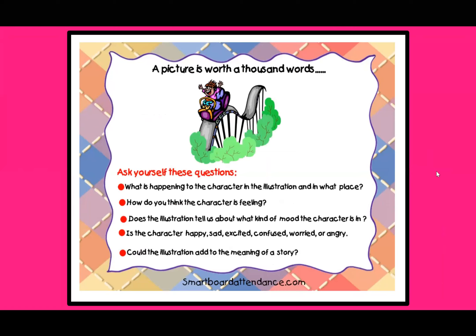Let's look at an example. In the picture, without looking at any of the text, I want you to think about these questions: What is happening to the character in the illustration? And in what place — what is the setting? You can see that they are probably on a roller coaster at an amusement park. Looking at their face, how do you think the character is feeling? Pretty happy because they have a smile on their face. They're probably really excited or thrilled because they're on a thrill ride. You can tell that they're excited and happy because they're smiling and their hands are up.